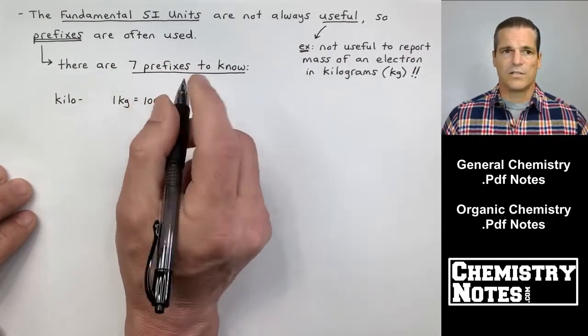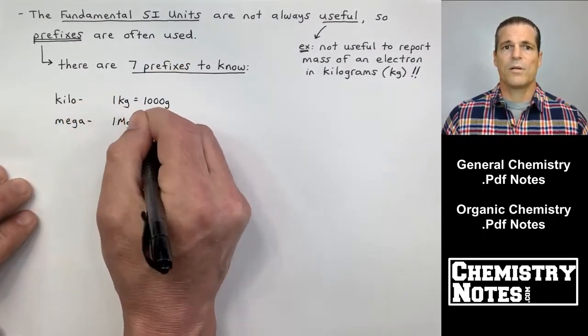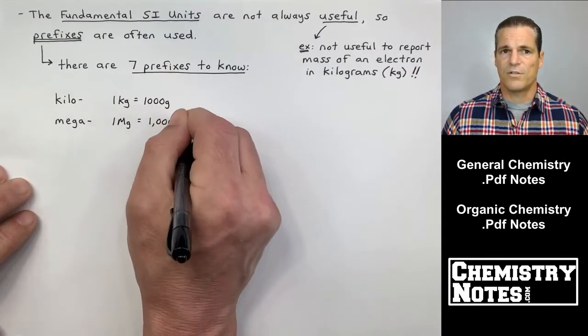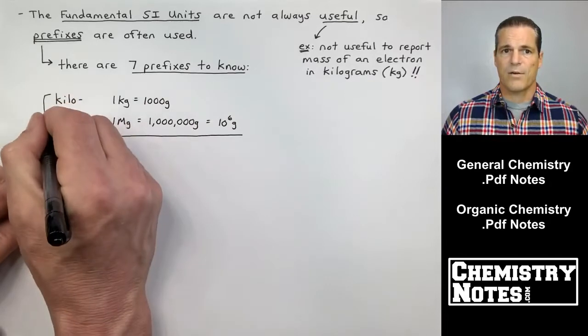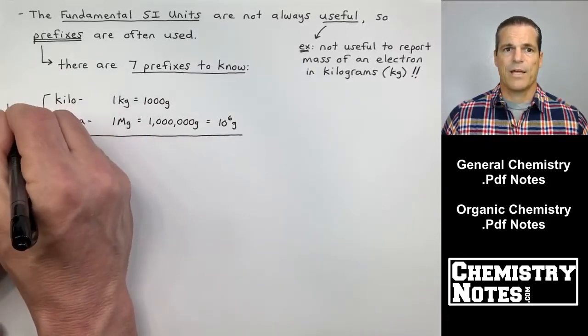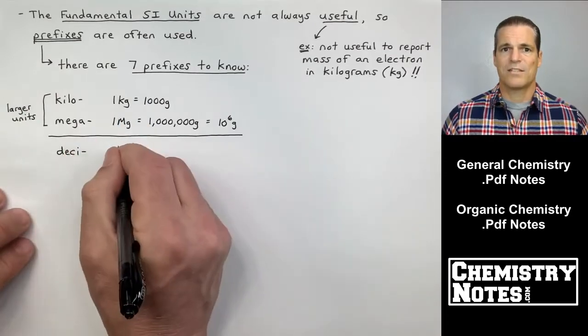Here are the larger ones, kilo and mega. There are others. These are the two larger prefixes that you should know. One kilogram is equal to a thousand grams. One megagram, that's a big M there, capital M. One megagram is a million grams or 10 to the six grams.